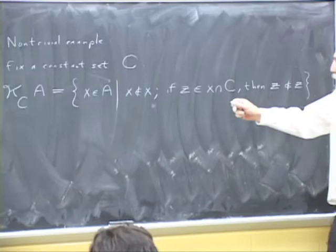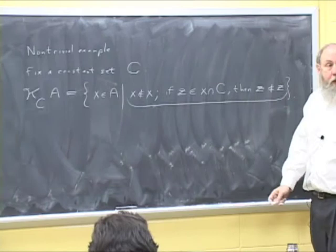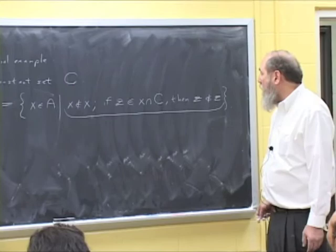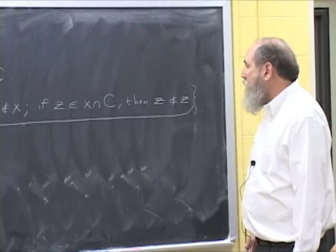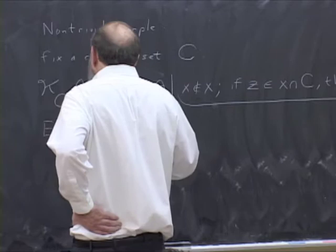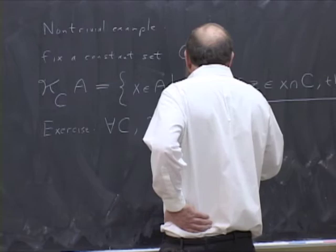All right, so here's an example of a proposition which is a little bit more complicated than Russell's proposition, but still a proposition that I can write down in a finite number of symbols, just using the language of set theory. And this is a symbol for intersection of sets. So you can show that for every C, kc is a consciousness operator.